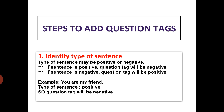In our example, 'You are my friend,' the type of sentence is positive. So the question tag must be negative, which is 'aren't you?' — as we have seen in the previous slide.